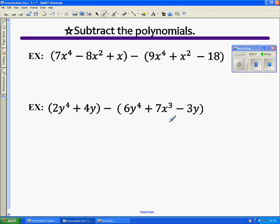And now we're going to look at subtracting the polynomials. The first and most important thing when we subtract is to distribute our negative and rewrite it. So this is minus 9x⁴ minus x² plus 18. So now we're going to add like terms. So we have x⁴ term, x⁴, so I say seven minus nine is going to be negative 2x⁴.